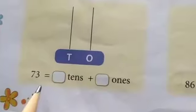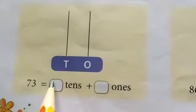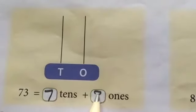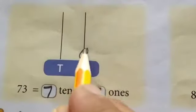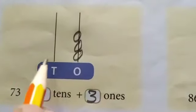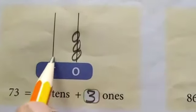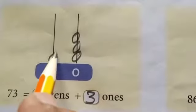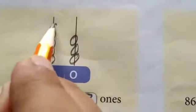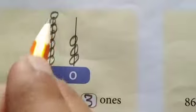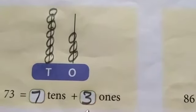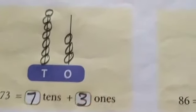The next number is seventy-three. Seventy-three has seven tens and three ones. Three ones and seven tens. Seven tens means seventy. Seventy plus three — seventy-three.